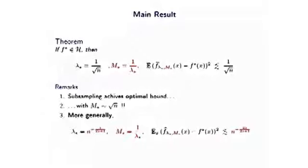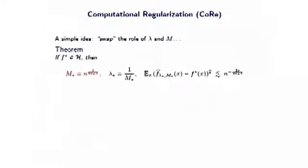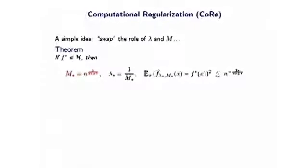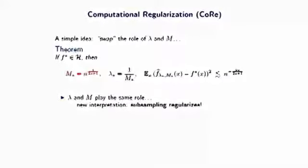Those are our technical contributions. I now give an interesting insight regarding the role of lambda and M. By rewriting our result and swapping the roles of lambda and M — expressing the theorem with M-star as the fundamental quantity — we see that the number of centers controls the regularization level of the learning algorithm. So lambda and M play the same role: they are both regularizers. This leads to a new interpretation: subsampling is a regularization method.